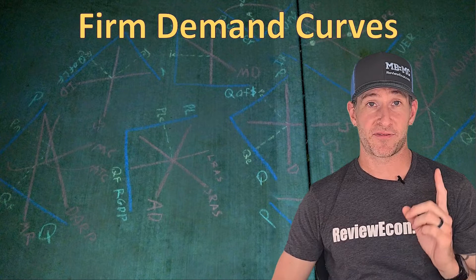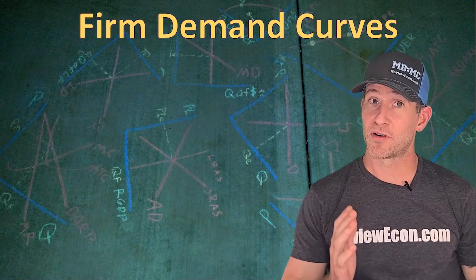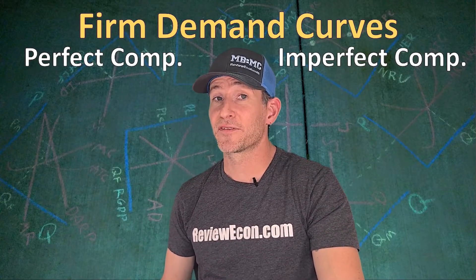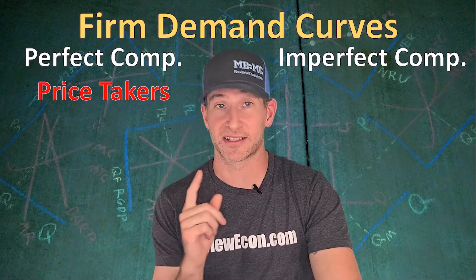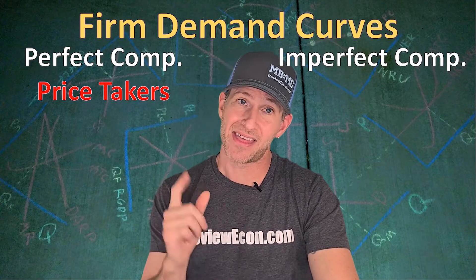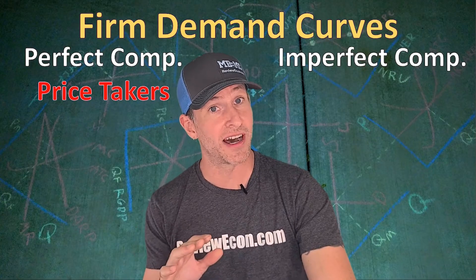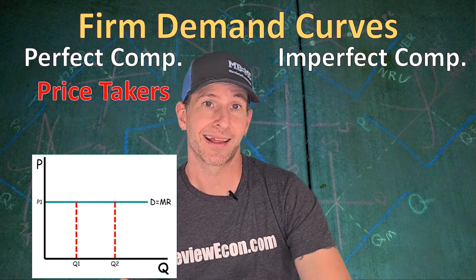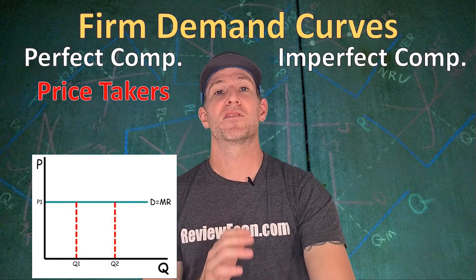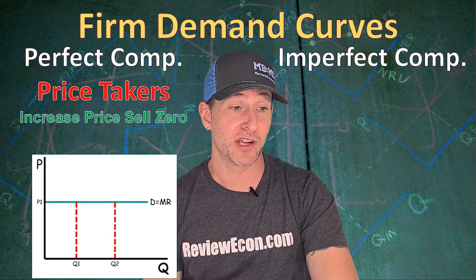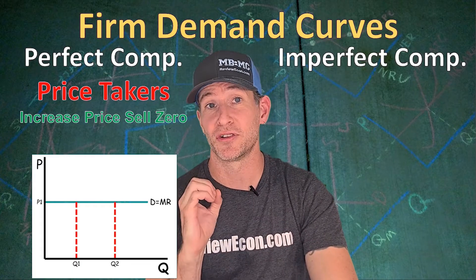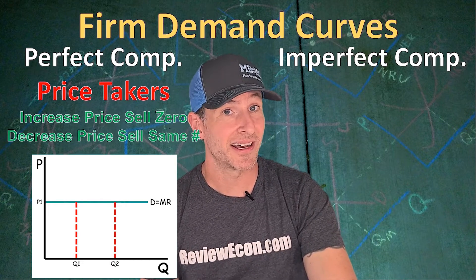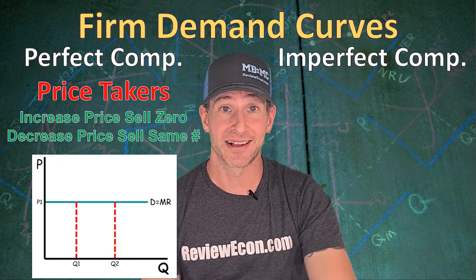Next, we're going to talk about the demand curves that firms face within imperfect competition, and compare it to the demand curve that perfectly competitive firms face. Perfectly competitive firms are price takers because the market supply and demand set the equilibrium price, and that is the price the firm gets for all units of output they can produce. That means a perfectly competitive firm has a horizontal demand and marginal revenue curve. If they increase the price above equilibrium, they will sell zero units. If they lower their price below equilibrium, they will still sell as much as they can produce but lose profit.